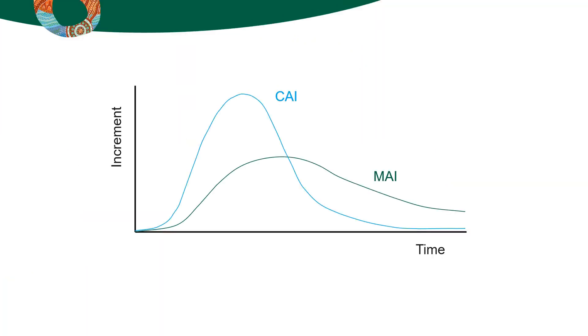For some trees to grow, others must die. If the CAI decreases to the point where it is lower than the MAI, then the MAI will also begin to decrease. This point indicates when thinning should be undertaken.